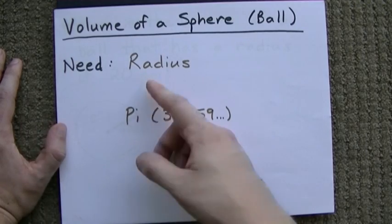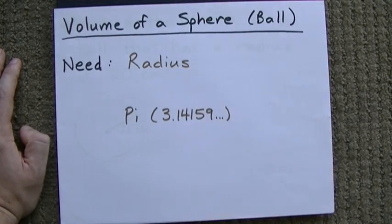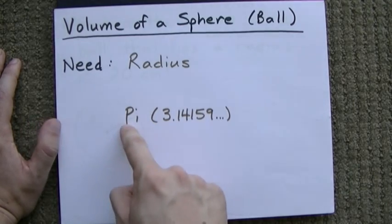The first is the radius of the sphere, that's the distance from the very center to the outside, and you need to know what pi is.